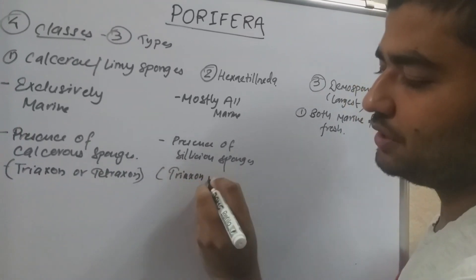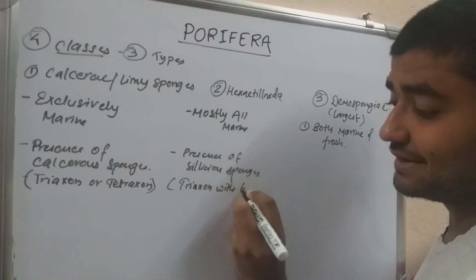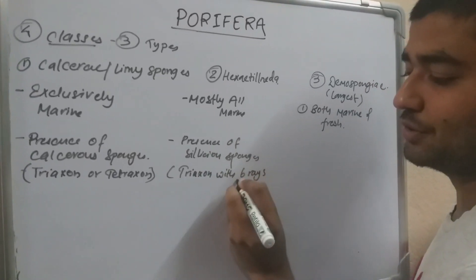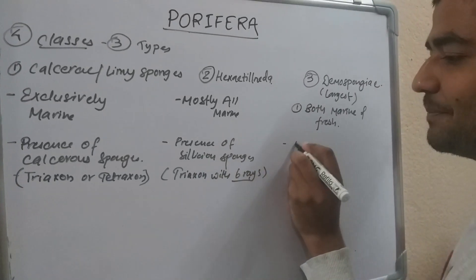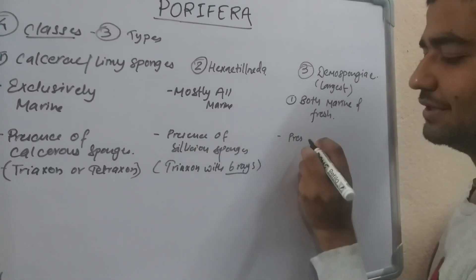The class Hexactinellida has spicules with six rays — siliceous spicules with six rays are the presence of this class.